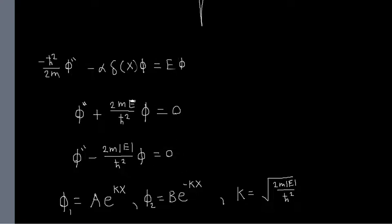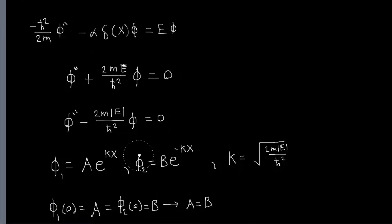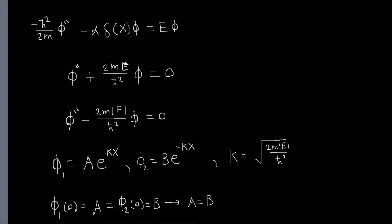And the only thing left is to use our boundary conditions. So we'll try the usual boundary conditions and see what happens. So the first boundary condition is that our wave function should be continuous at our boundary at zero. So phi one of zero should equal phi two of zero. And that just tells us that A is equal to B.